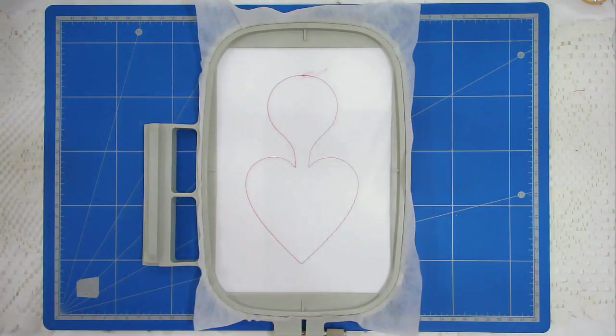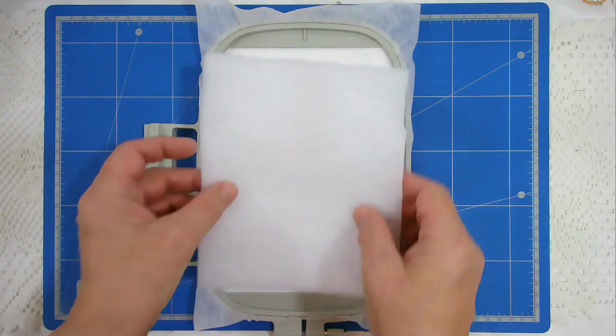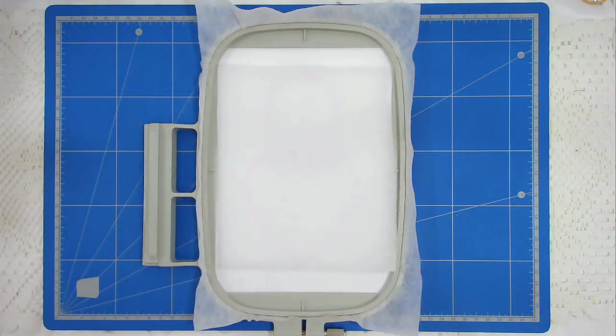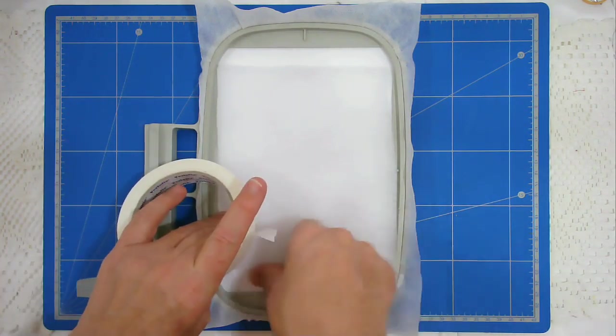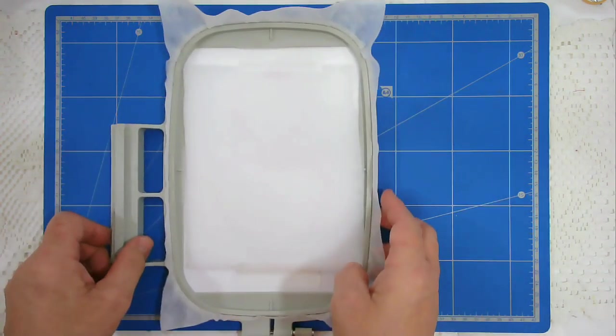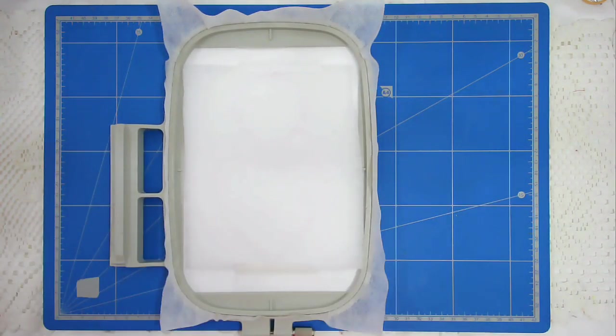Next you're going to place your batting down over the outline here and tape it in place. Now pop it in your machine and stitch round number 2, which is going to attach the batting and it will also give you a placement for your fabric.